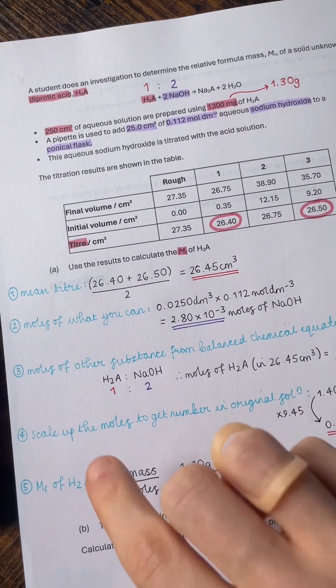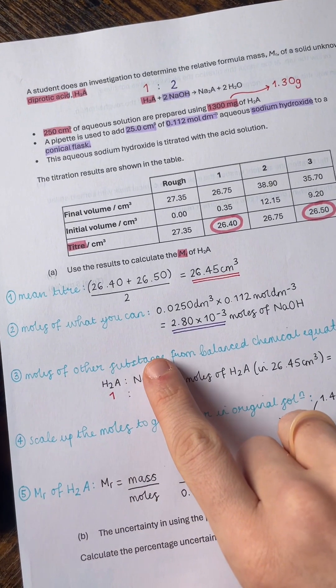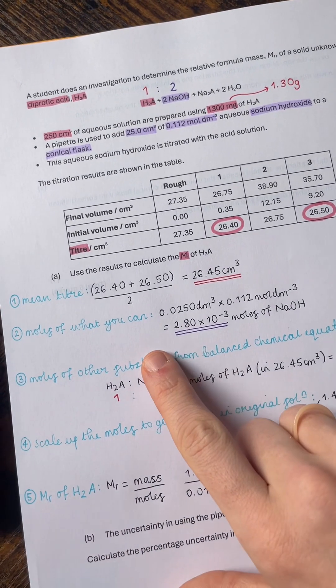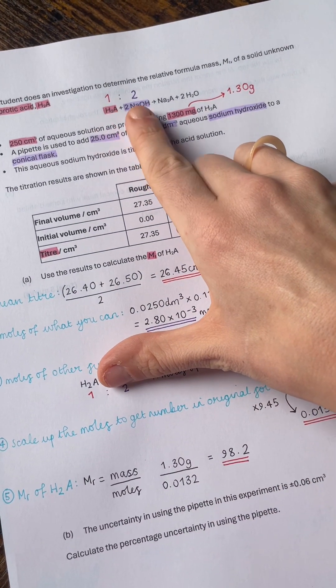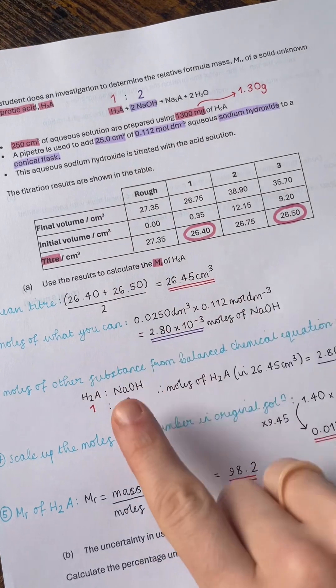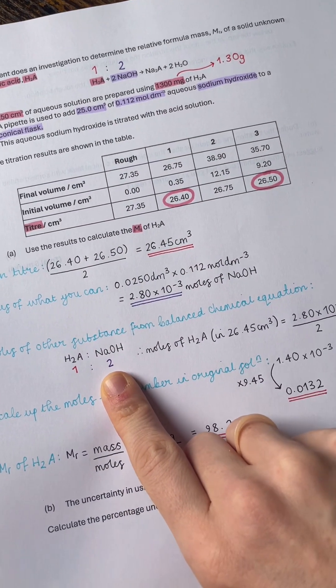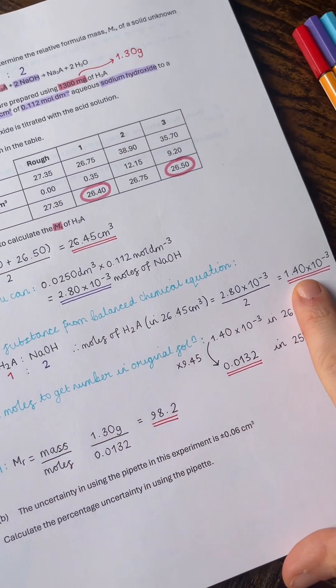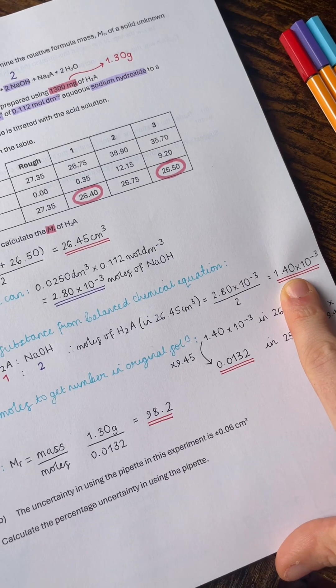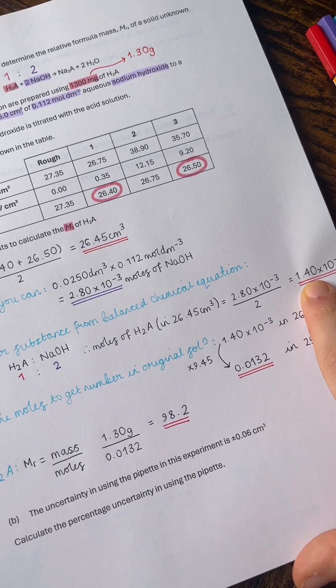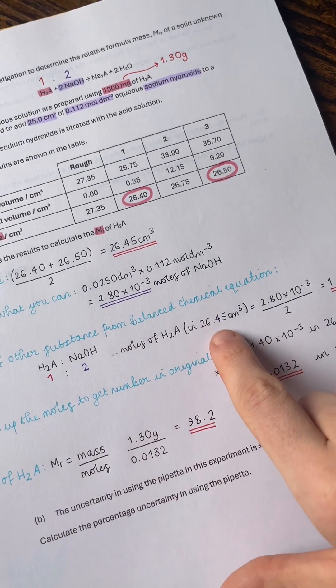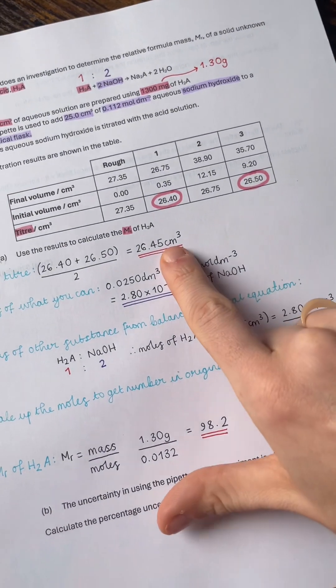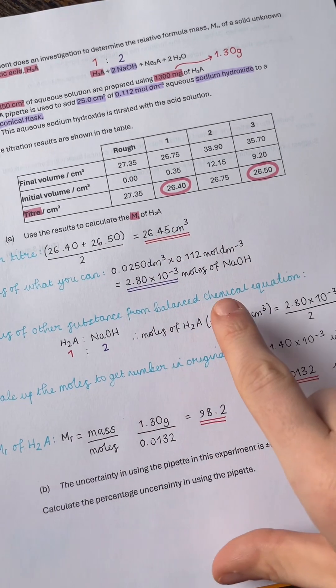Step three is then to always get the moles of the other substance, which is usually what you're trying to figure something out about from our balanced chemical equation. So the ratio of the H2A to the NaOH is 1 to 2. Therefore, I need to halve the moles of sodium hydroxide to give me 1.40 × 10⁻³ moles of the H2A. Now that is going to be the moles of the H2A in the 26.45 cm³ that we worked out in step one.